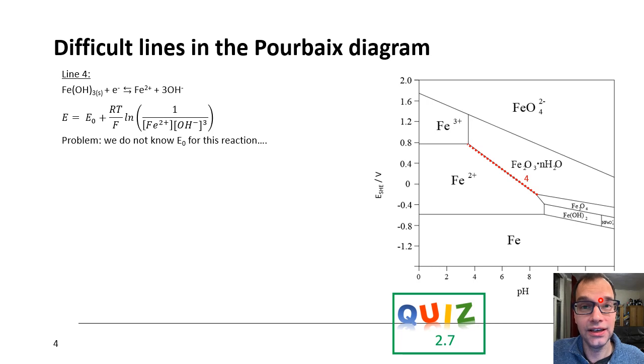Now, what we could consider doing is taking the Nernst equation of this reaction. E is E0 plus RT divided by F times LN of this term. But the problem is that when you start looking for the E0 of this equation, you're not going to find it. Because it's not in the list. And there is a reason for that.